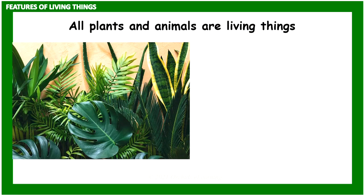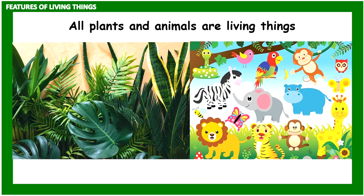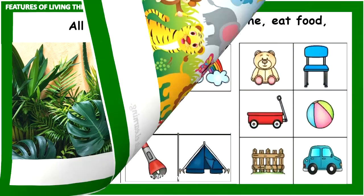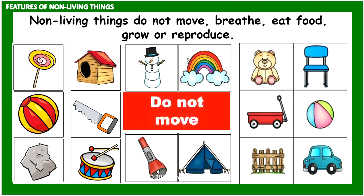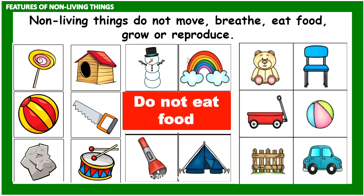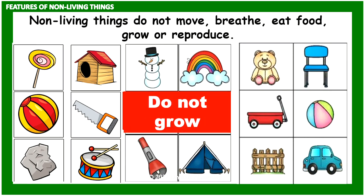All plants and animals are living things. Non-living things do not move, breathe, eat food, grow, or reproduce.